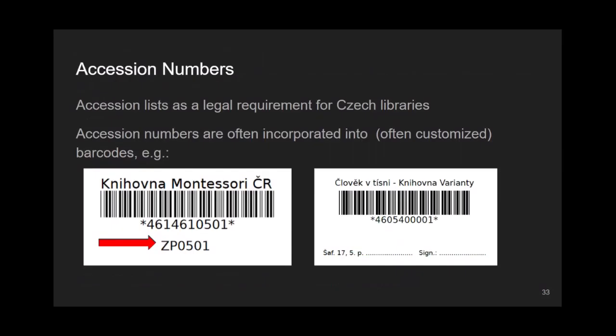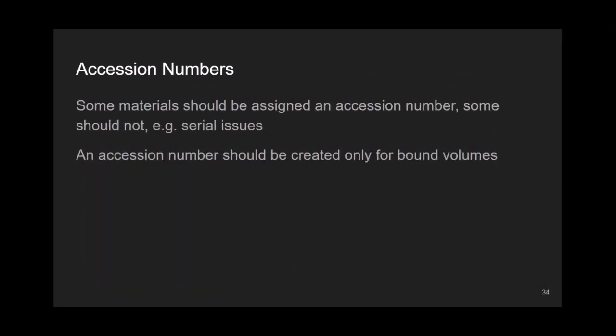Let us move on to accession numbers. Assigning accession numbers is mandatory for Czech libraries. Nowadays, some libraries incorporate accession numbers into barcodes, as can be seen on the left image. Also, not every material should be assigned an accession number. For example, individual serial issues should not have an accession number, but once the issues are bound together, the resulting volume should receive one.